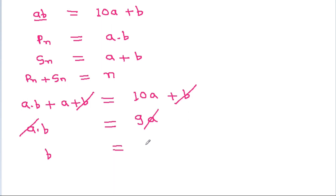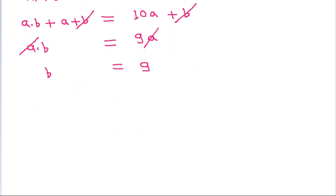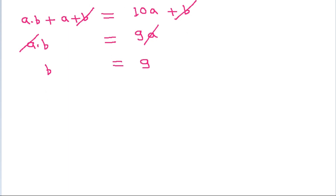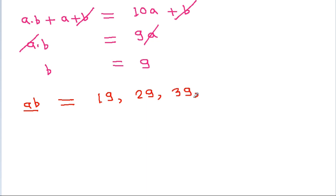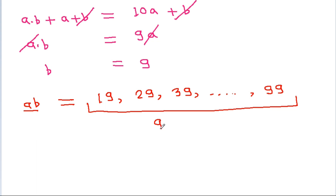So B equals 9. A can be 1 and B is 9; A can be 2, B is 9; A can be 3, B is 9; and so on up to A equals 9, B is 9. Total: 9 numbers.